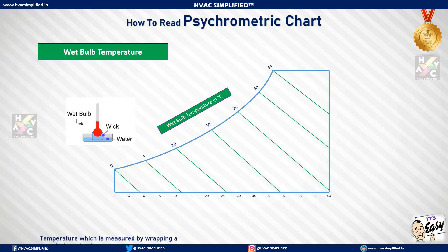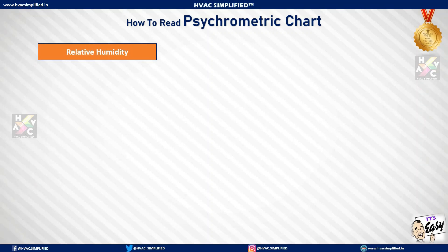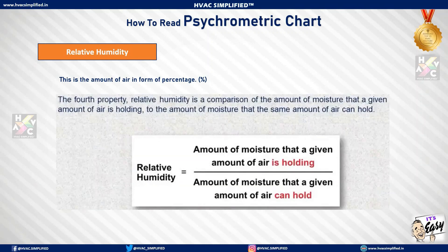The third important parameter of a psychrometric chart is relative humidity. Relative humidity is the amount of moisture in air expressed as a percentage. It is a comparison of the amount of moisture that a given amount of air is holding to the amount of moisture that the same amount of air can hold. To understand relative humidity in detail, there is another dedicated video available.